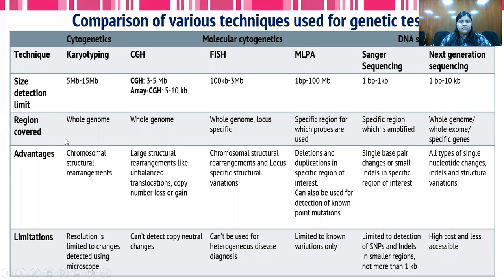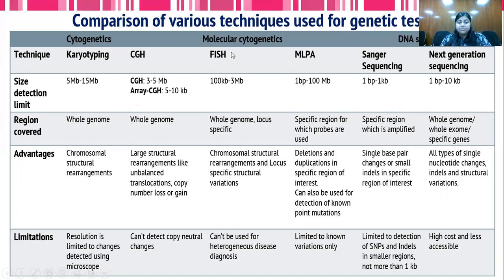In case of different techniques, we can see what regions are covered. For example, karyotyping, array CGH, FISH, and next generation sequencing can cover the whole genome. However, MLPA and Sanger are specific to a region of interest. Each technique has advantages in the types of variations it can detect, and limitations in that certain techniques cannot be utilized for certain types of variations — for example, array CGH cannot detect copy-neutral changes.